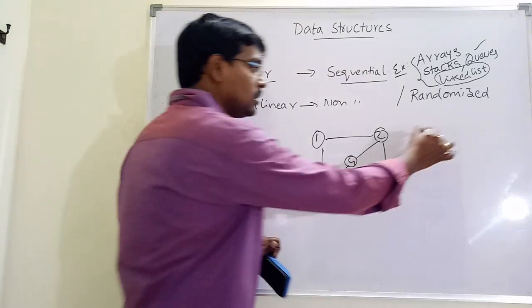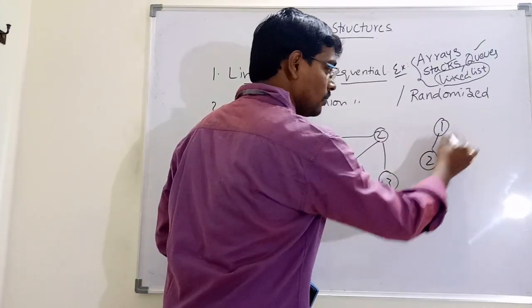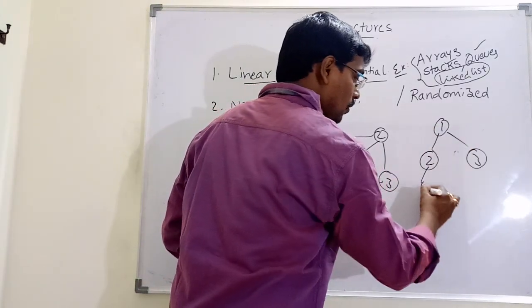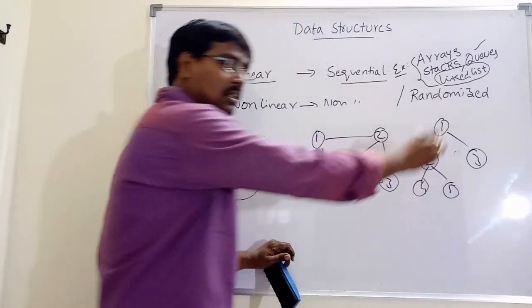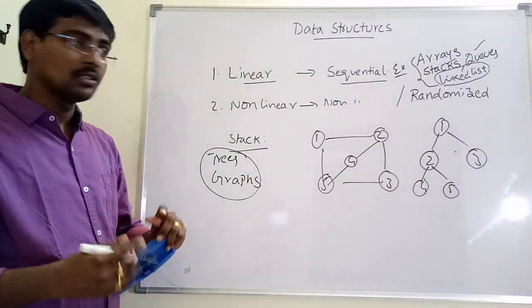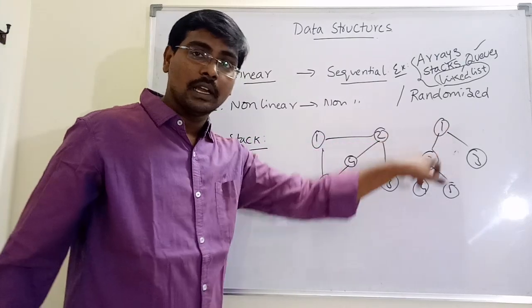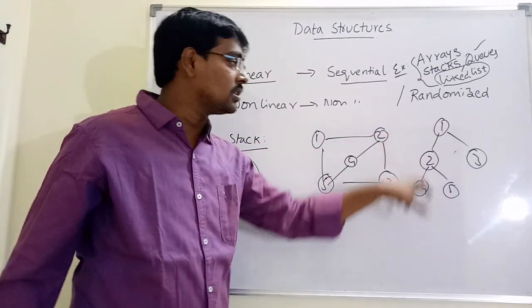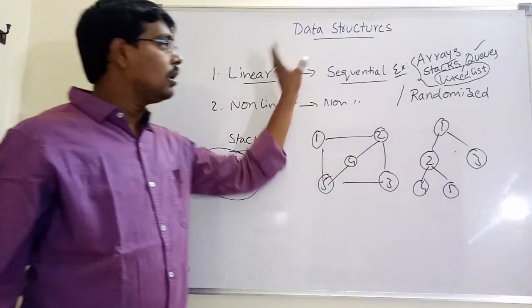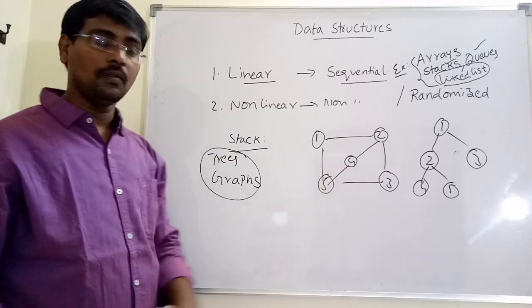Similarly, a tree represents nodes such as 1, 2, 3, 4, and 5. In a tree, we also have nodes and corresponding edges, that is, paths between nodes. All these represent organization of data. The main difference between a tree and a graph is that a graph contains cycles, whereas a tree does not contain cycles.